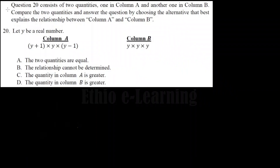Question 20 consists of two quantities, one in Column A and another one in Column B. Compare the two quantities and answer the question by choosing the alternative that best explains the relationship between Column A and Column B. Let Y be a real number. Column A: (Y+1) times Y times (Y-1). Column B: Y times Y times Y.